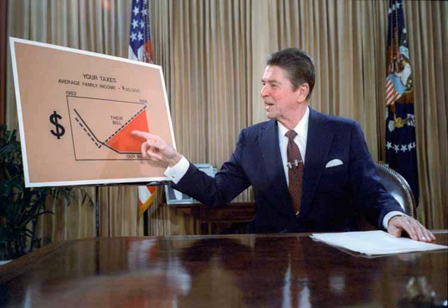GDP per employed person increased at an average 1.5% rate during the Reagan administration, compared to an average 0.6% during the preceding eight years. Private sector productivity growth, measured as real output per hour of all persons, increased at an average rate of 1.9% during Reagan's eight years, compared to an average 1.3% during the preceding eight years. Federal net outlays as a percent of GDP averaged 21.4% under Reagan, compared to 19.1% during the preceding eight years. During the Nixon and Ford administrations, a combined supply and demand side policy was considered unconventional by the moderate wing of the Republican Party.